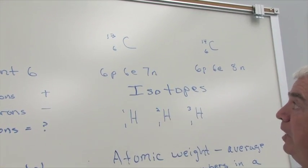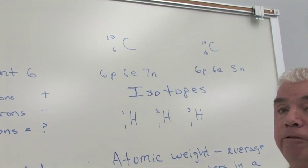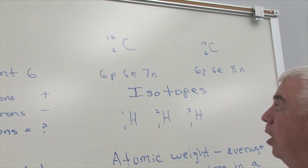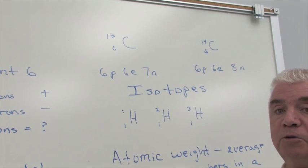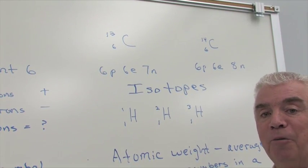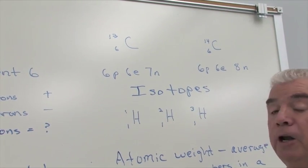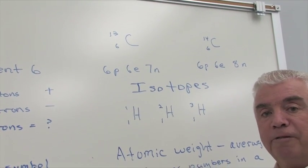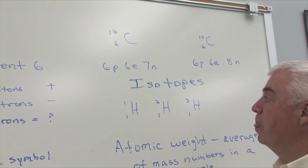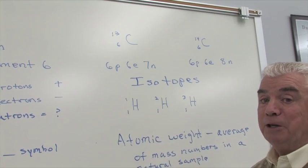And these three examples, carbon 12, 13, and 14, are referred to as isotopes. Isotopes of an element have different number of neutrons or a different mass number. And they all have the same atomic number.